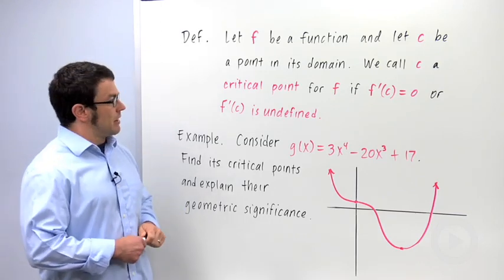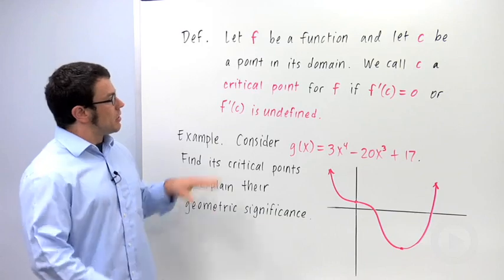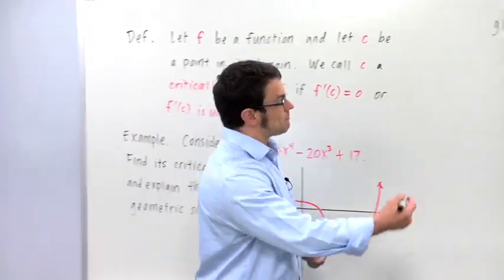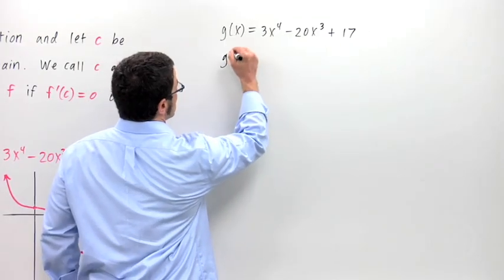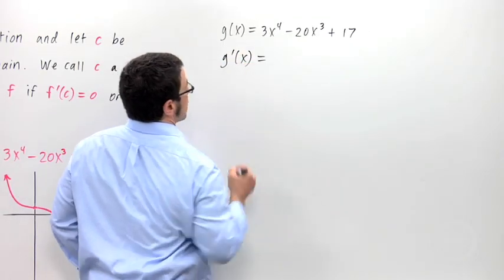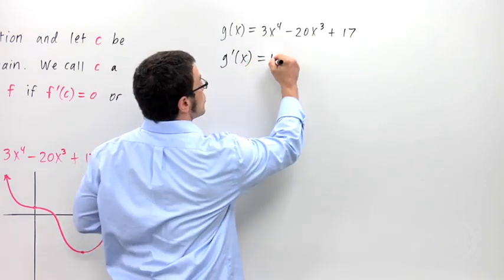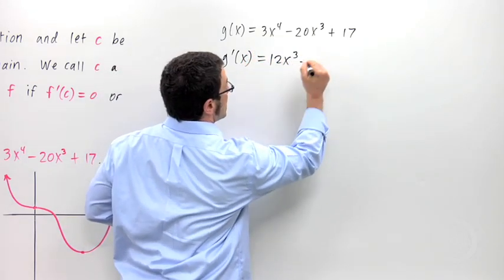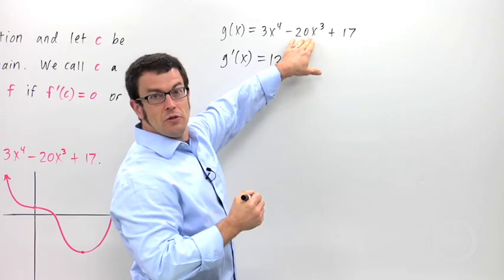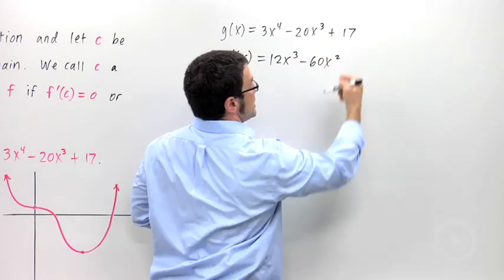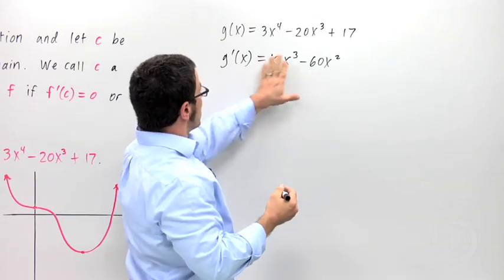First, I'm going to find the critical points, and you'll notice the critical point involves the derivative. So the first thing I'll do is take its derivative. It's a polynomial, really easy to differentiate. The derivative of 3x^4 is 12x^3. The derivative of 20x^3 is 60x^2. And the derivative of 17 is 0. So this is my derivative, nice and easy.